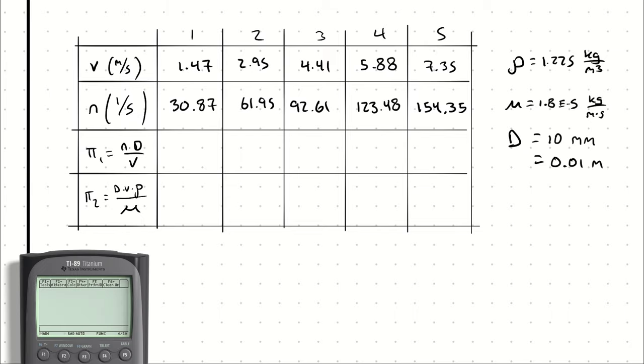Now we can get to calculating. For the first observation, I had a shedding frequency of 30.87, multiplying by diameter 0.01 and dividing by velocity 1.47, I get 0.21. For observation two, 61.95 × 0.01 / 2.95 = 0.21. For observation three, 92.61 × 0.01 / 4.41 = 0.21. For observation four, 123.48 × 0.01 / 5.88 = 0.21. Then for observation five, 154.35 × 0.01 / 7.35 = 0.21.